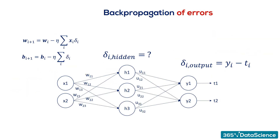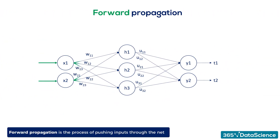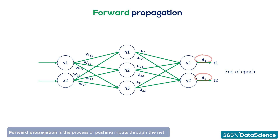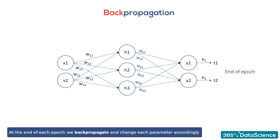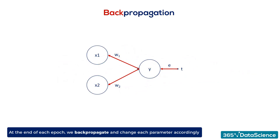Let's start from the other side of the coin — forward propagation. Forward propagation is the process of pushing inputs through the net. At the end of each epoch, the obtained outputs are compared to the targets to form the errors. Then we backpropagate through partial derivatives and change each parameter so errors at the next epoch are minimized. For the minimal example, backpropagation consisted of a single step: aligning the weights given the errors we obtained.